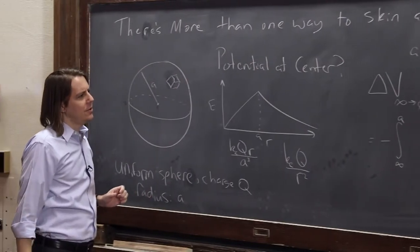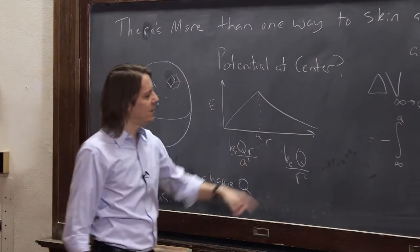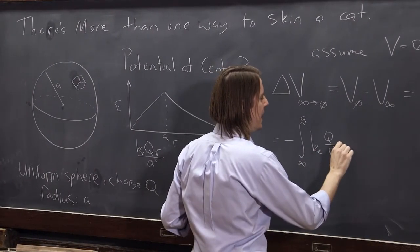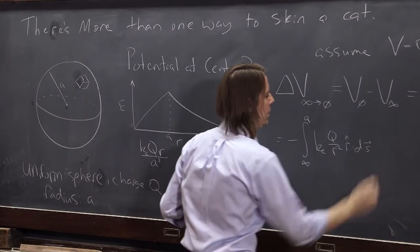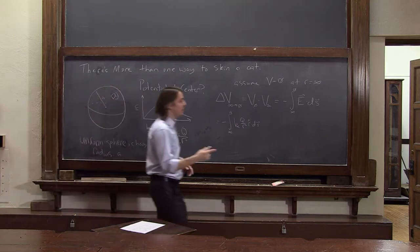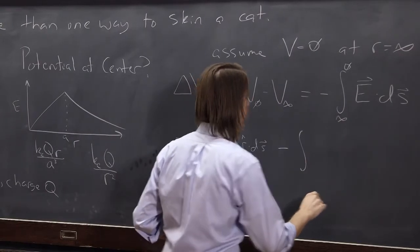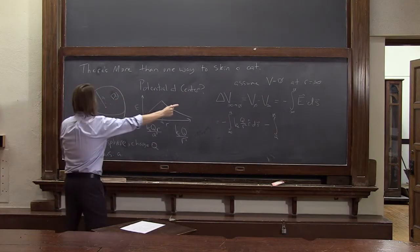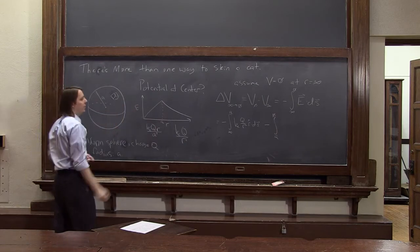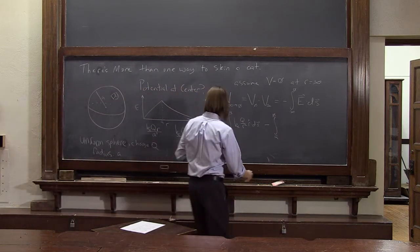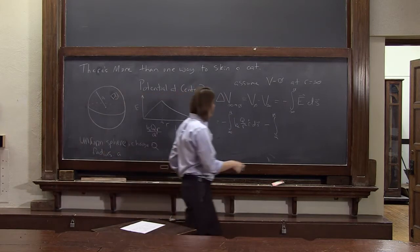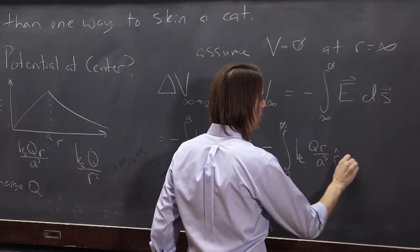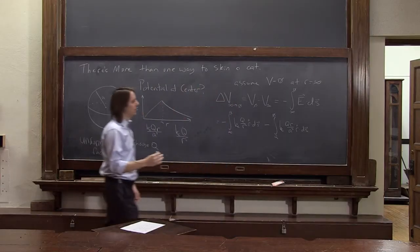And there, the E field is, out there, it's KQ over R squared. KEQ over R squared. And remember, it's this R hat dot DS. And then, we need to do the rest of the problem. Minus another integral, keep summing from A to zero. So now, first we went infinity to here, and now we're going from here all the way to there, where we were trying to get. And that's E dot DS. E is KEQR over A cubed. KEQR over A cubed, and also R hat dot DS.